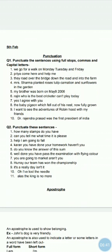Number five: Do you know the answer of the sum? D is capital and after 'sum' that is a question mark. Number six: Well done! You have passed the examination with flying colors. 'Well done' — W capital, exclamation mark after 'done'. 'You have passed the examination with flying colors' full stop. Number seven: You are going to the market, aren't you? Y capital, after 'market' comma, 'aren't you' question mark. Number eight: Hurray! Our team has won the championship. After 'Hurray' exclamation mark, 'Our team has won the championship' full stop.